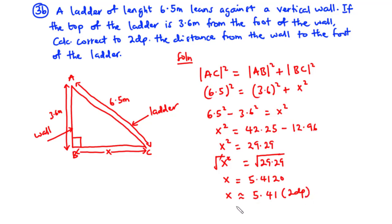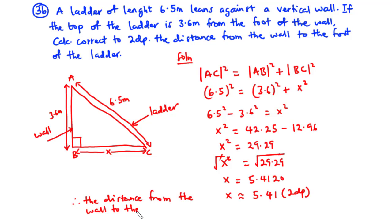So the distance from the wall to the foot of the ladder is 5.41 meters.